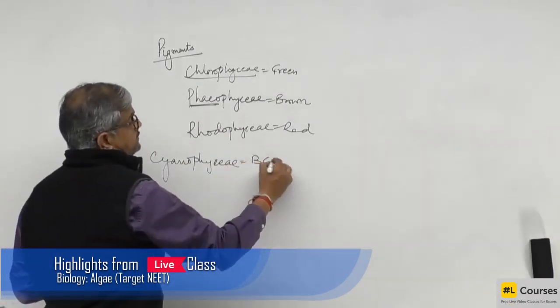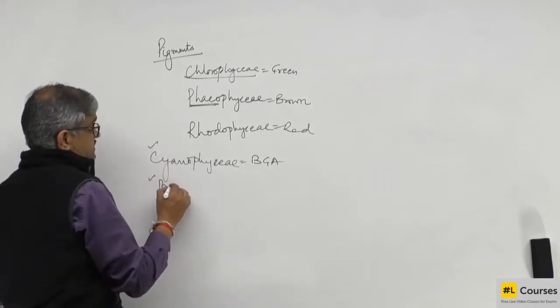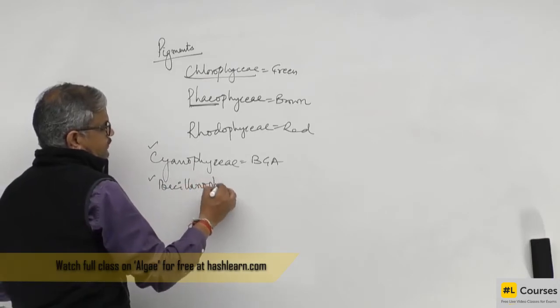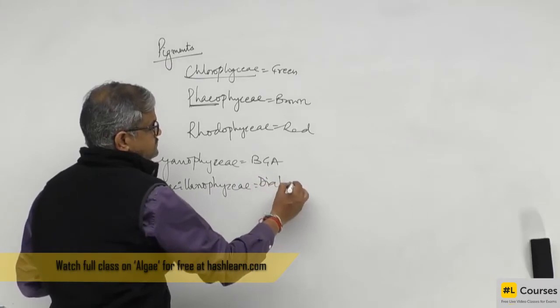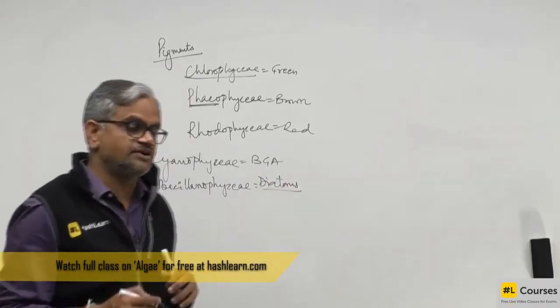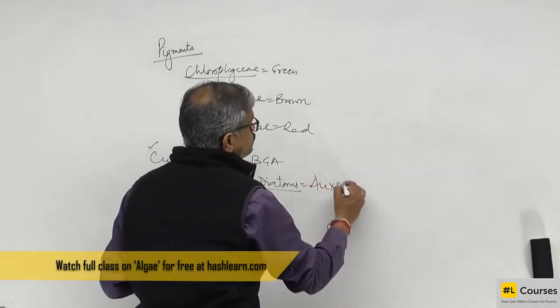That is blue-green algae. Very interestingly, another is bacillariophyceae. I have discussed bacillariophyceae in the time of protista when I told you about diatoms, where I use the word they are jewels of the plant kingdom because they make very interesting spores called oxospores.